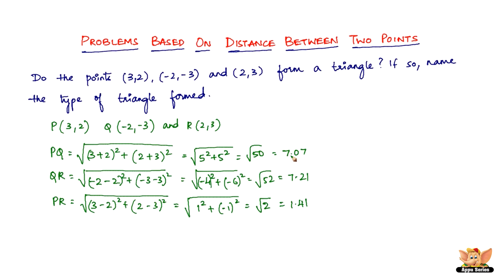Now that we have the three distances, to check if these three points form the vertices of a triangle, the condition is that the sum of any two sides should be greater than the third side. So: 7.07 plus 1.41 is greater than 7.21, and 7.21 plus 1.41 is greater than 7.07. This confirms that points P, Q, and R are indeed vertices of a triangle.